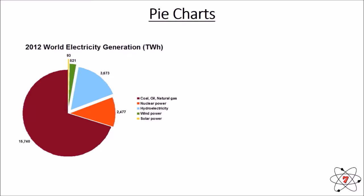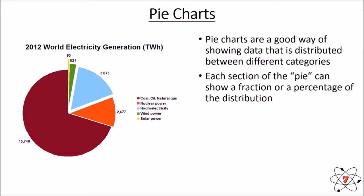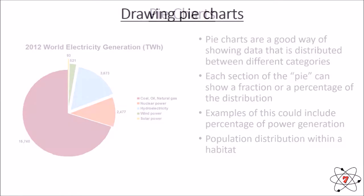Pie charts are another really important type of chart and they're used quite differently to the other charts we've seen so far. Pie charts are really good at showing data that's distributed between different categories. So, if we look at the pie chart that we can see, we can see we're looking at how electricity is generated throughout the world. And the different categories are obviously the different methods of producing electricity. In a pie chart, each section of the pie normally shows a percentage or a fraction. So long as our fraction adds up to one or our percentages add up to a hundred, a pie chart is a very good way of showing this kind of data. So, as we've already seen, a good example could be power generation or population distribution within a habitat.